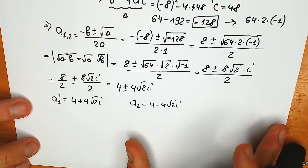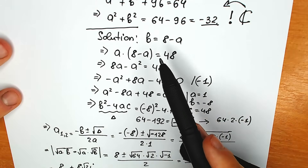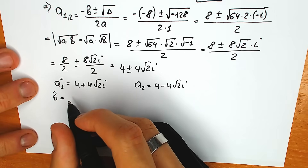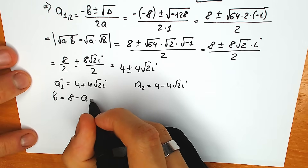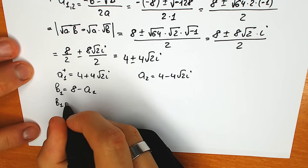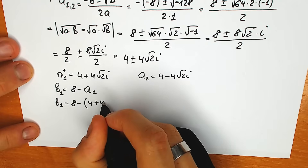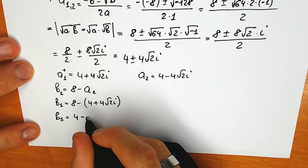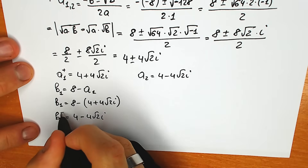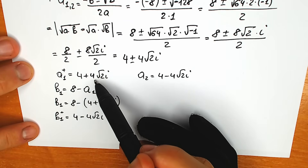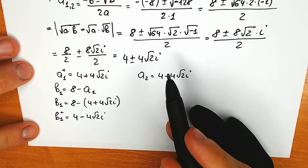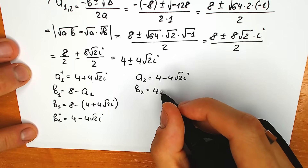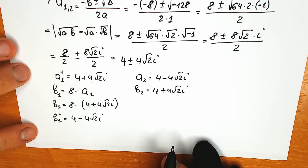Now let's find b. Using b equals 8 minus a: b₁ equals 8 minus a₁, which is 8 minus (4 plus 4√2·i), giving b₁ equals 4 minus 4√2·i. And b₂ equals 8 minus a₂, which is 8 minus (4 minus 4√2·i), giving b₂ equals 4 plus 4√2·i. As you can see, this is a symmetrical thing — we have absolutely symmetrical roots.